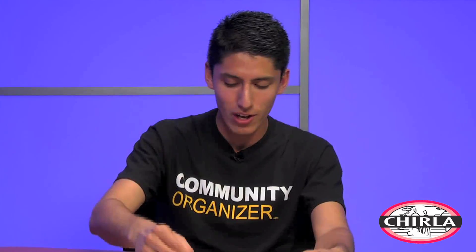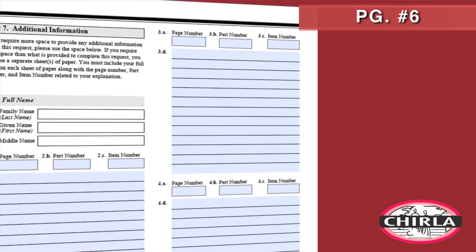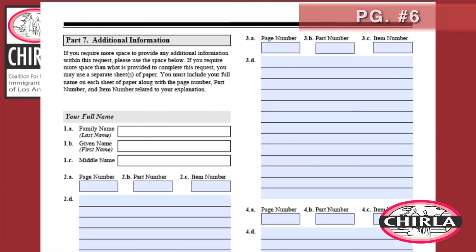The last page, page six, asks for additional information. The only reason to use this page is if you answered any questions on pages one through five and did not have enough space — for example, for the addresses.